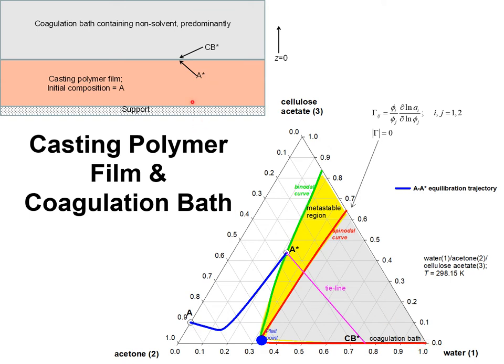The composition at the interface between the casting polymer film and the coagulation bath is A star and CB star, which is A star is on the side of the casting film and CB star is the corresponding composition at the interface in the coagulation bath.